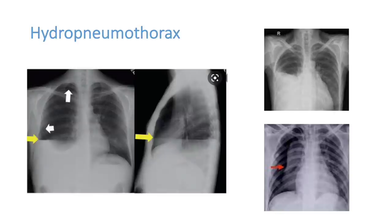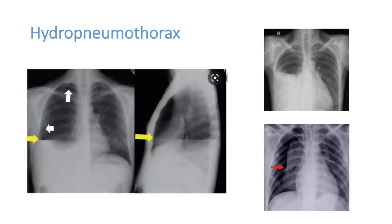During any pleural tapping or removal of fluid, patients can sometimes develop minimal pneumothorax. When they develop hydropneumothorax, you will see the upper part is air (black) and the lower part is water (white), separated by a straight line. This is commonly seen after pleural tapping. Patients with chest trauma can also develop hydropneumothorax due to tension pneumothorax or bleeding into the pleural cavity from penetrating chest trauma.